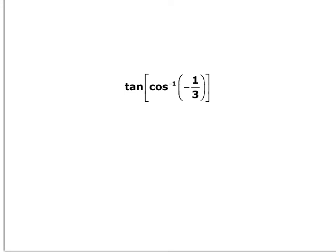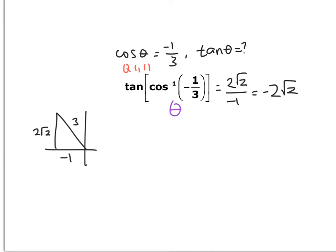Now try: tangent of cosine inverse of negative 1/3. Cosine of some angle equals negative 1/3 — what's the tangent of that angle? Cosine inverse exists in quadrants 1 and 2, and since cosine is negative, you're in quadrant 2. Draw your triangle there. Cosine is x over r, so x = −1 and r = 3. Pythagorean theorem gives y = 2√2. Tangent is y over x, giving 2√2 over negative 1, which is negative 2√2.